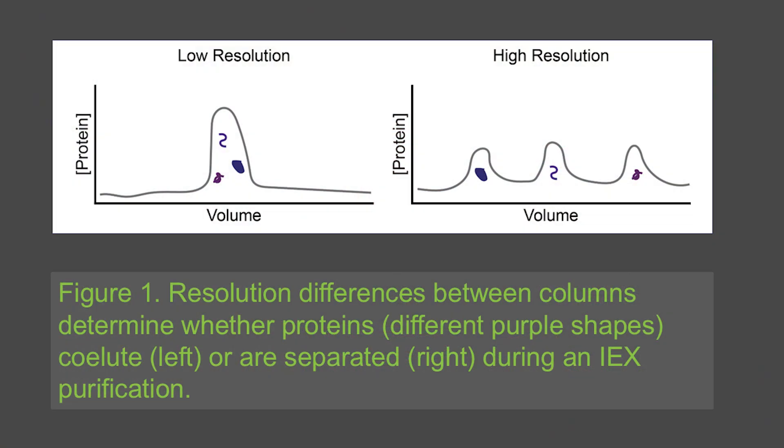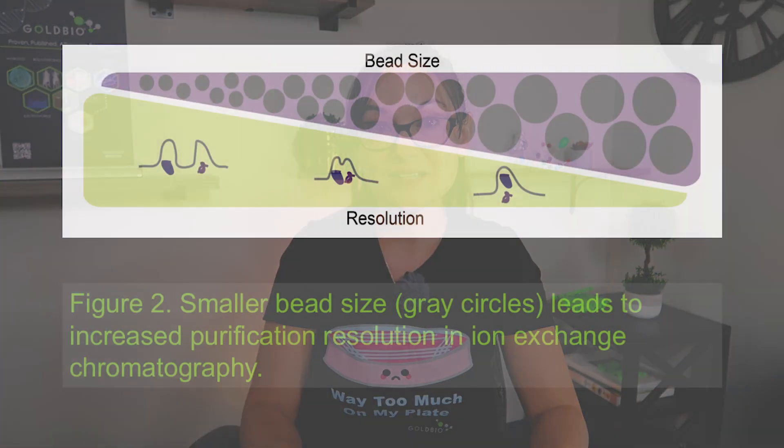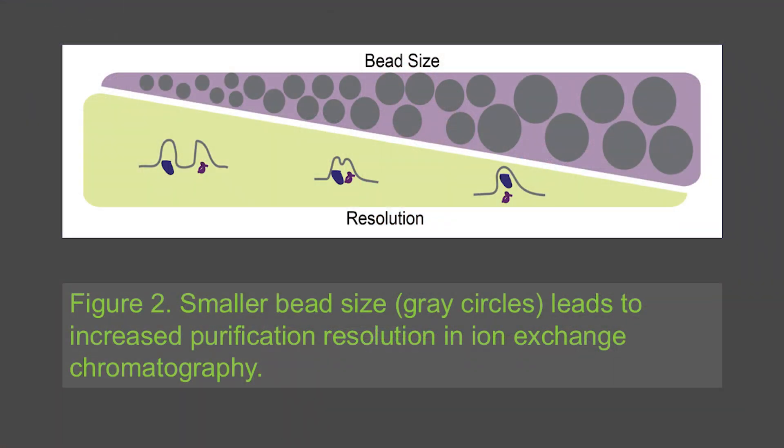Whether you're using cation exchange or anion exchange resins, you should also consider the resolution. Resolution refers to the column's ability to separate proteins with similar charge properties, and it is mainly influenced by the resin bead size. Smaller beads provide higher resolution, while larger beads offer lower resolution. There's a trade-off between resolution and speed: high resolution resins run at a lower flow rate, taking longer, while moderate resolution resins offer faster purification.